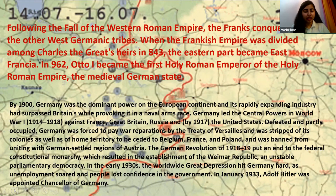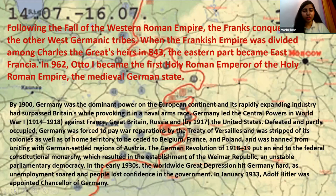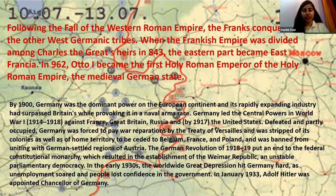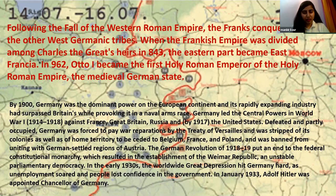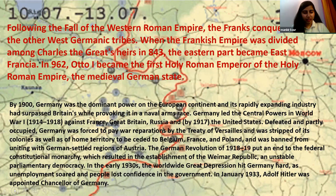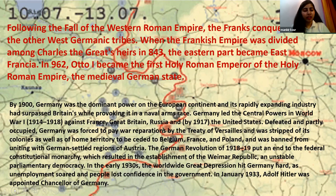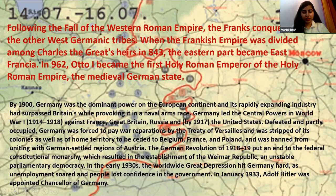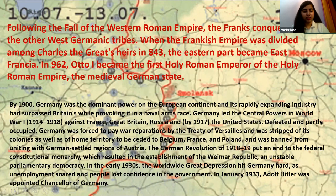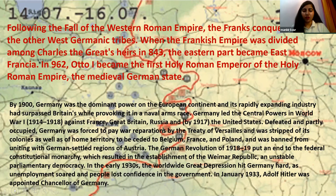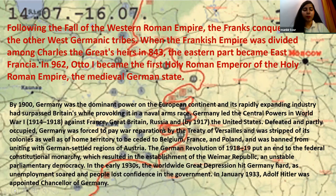By 1900, Germany was the dominant power on the European continent. Germany led the Central Powers in World War I against France, Great Britain, Russia, and the United States. Defeated and partly occupied, Germany was forced to pay war reparations by the Treaty of Versailles, was stripped of its colonies, lost home territories to Belgium, France, and Poland, and was banned from uniting with German settlers of Austria.